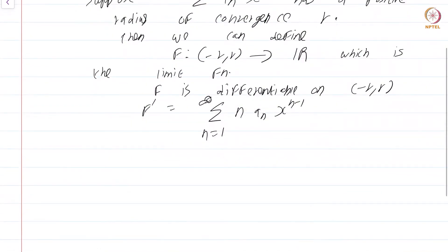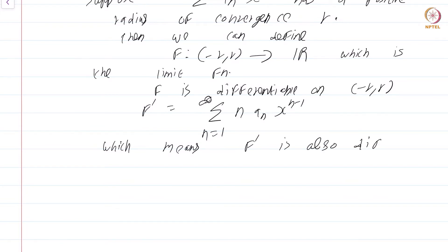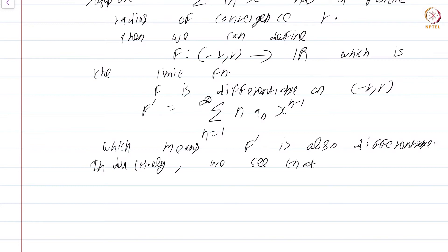Recall that the radius of convergence of this term-by-term derived power series is the same radius r as before, which means f prime is also differentiable. Inductively, we see that f is a smooth function on (-r, r). So any function that is defined as the limit of a power series is going to be a smooth function.